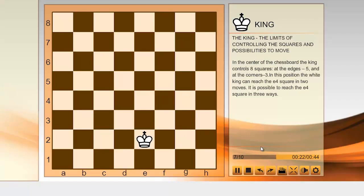In this position, the white king can reach the e4 square in two moves. It is possible to reach the e4 square in three ways.